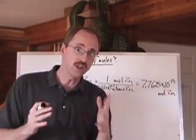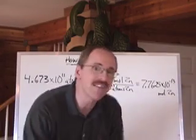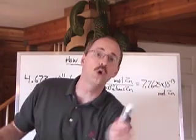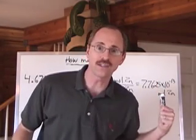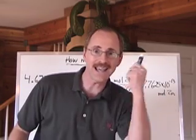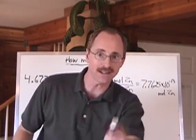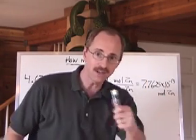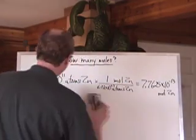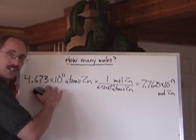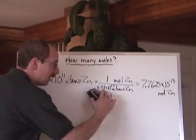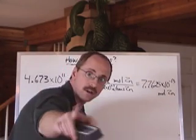Now, of course, that number isn't good enough because we need to have the same number that everybody else in the world would have if they were doing this calculation. If there's four significant digits here, which there are, and three here, how many are we allowed to keep? Three. That's right.